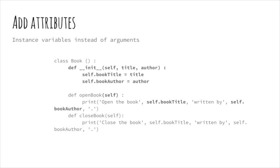The next object-oriented feature in Python are attributes — the variables that contain state data that further describe an object. The syntax of an attribute is no different from a variable; its location in the program and how it is referenced is what distinguishes a variable from an attribute. In addition, there is a special Python method used to initialize attributes for an object.